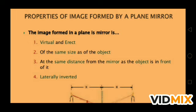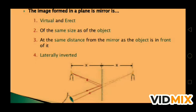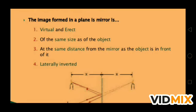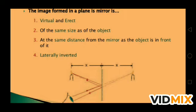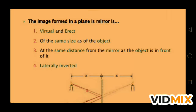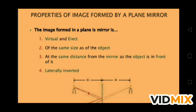The properties of images formed by a plane mirror — you all learned this in the previous class. The image formed in a plane mirror is virtual and erect, the same size as the object, and at the same distance from the mirror as the object in front of it. As seen in the diagram, the candle is x distance away from the mirror and its image is also x distance away. The fourth property is laterally inverted — left appears as right and right appears as left.